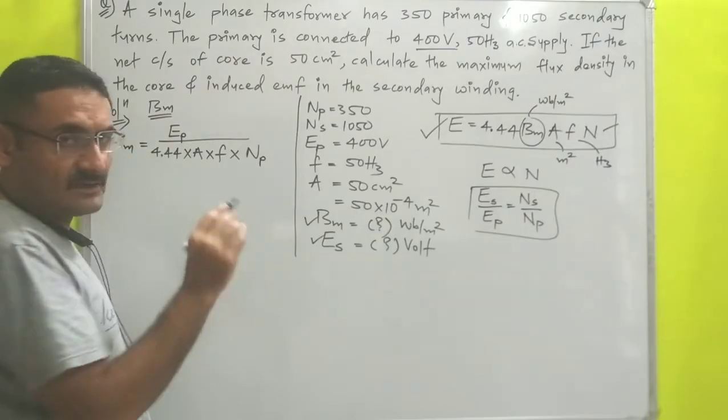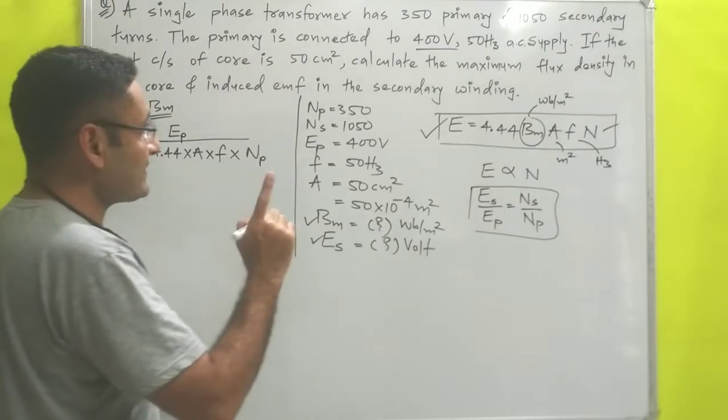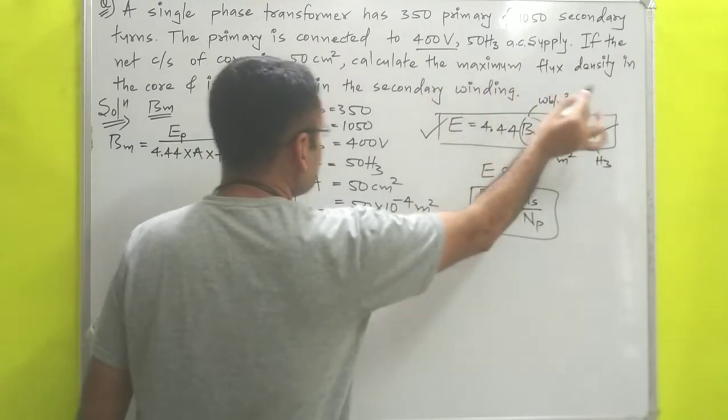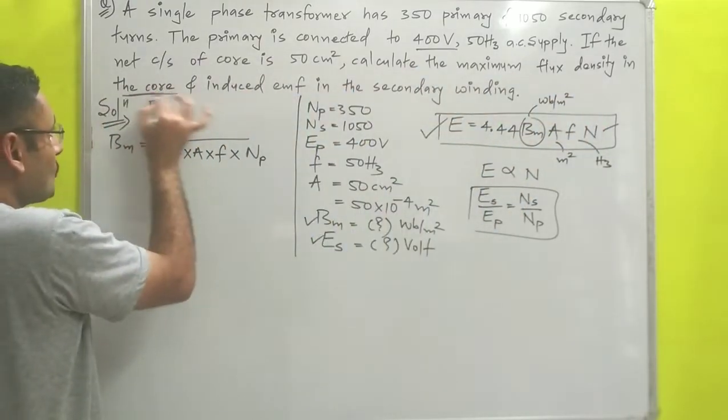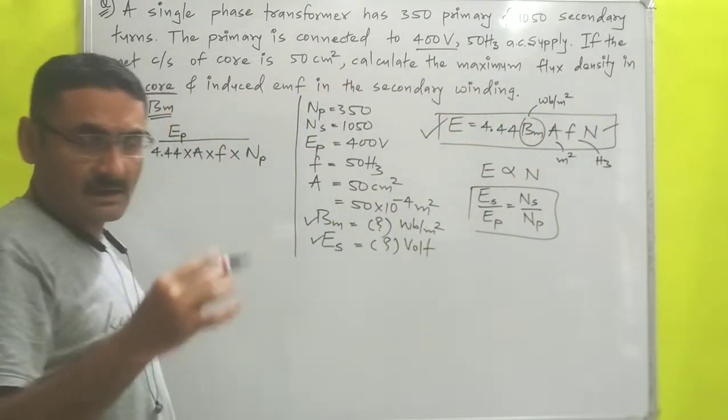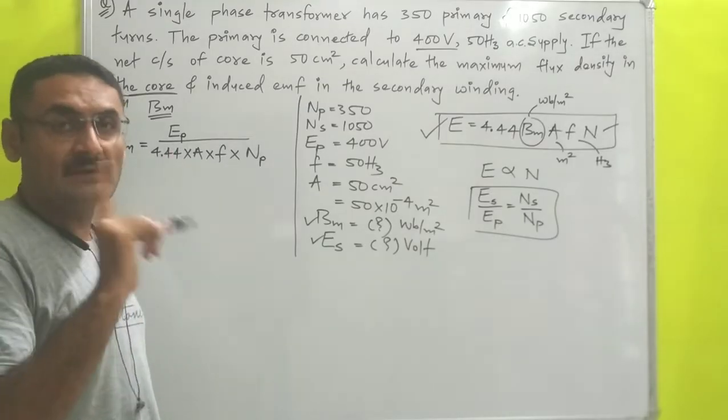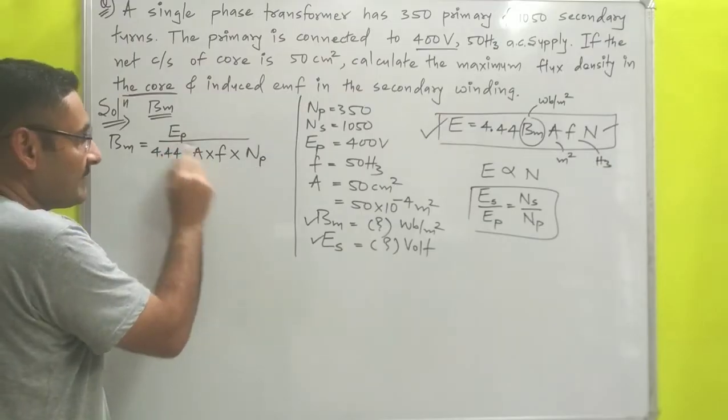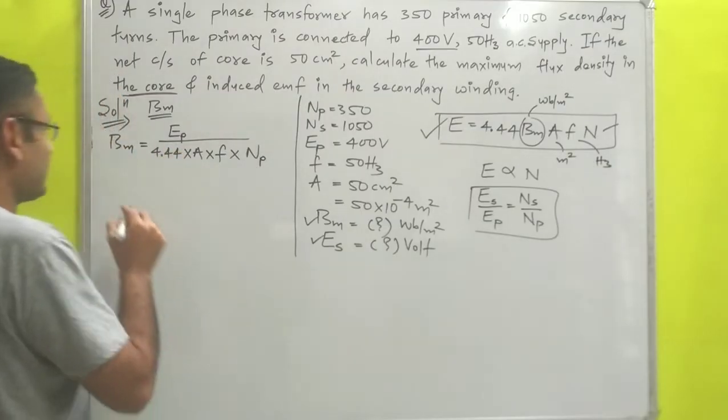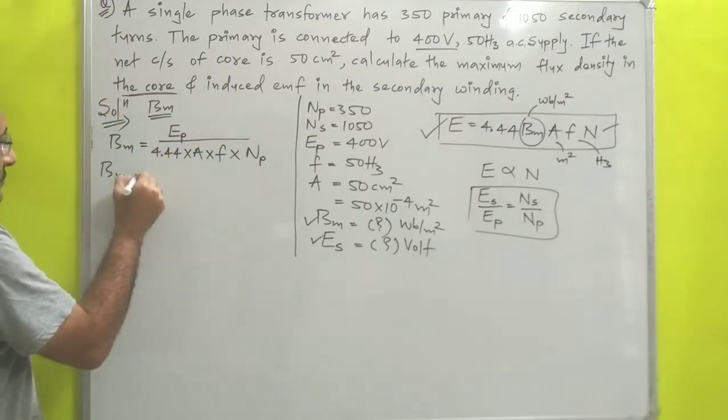But the statement says calculate the maximum flux density in the core. In the core, flux is produced due to the current which is flowing in primary coil. That is why we are writing primary Np and Ep.